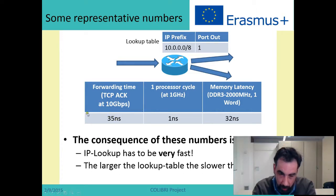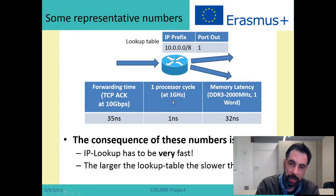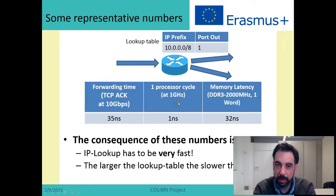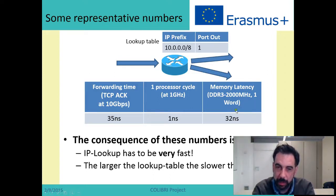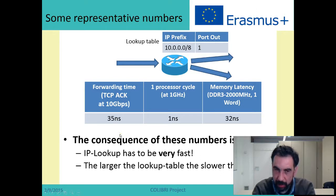Just to give you an idea of the order of magnitude of how small this number is: in a 1 GHz processor, one cycle takes just one nanosecond, and in DDR3 memory, accessing one word takes 32 nanoseconds. Of course, routers are not built using these memories, but this gives you an idea of how small this number is and how fast you have to operate. As a summary, building routers is pretty challenging, and the IP lookup is one of the biggest challenges because it has to be very, very fast.